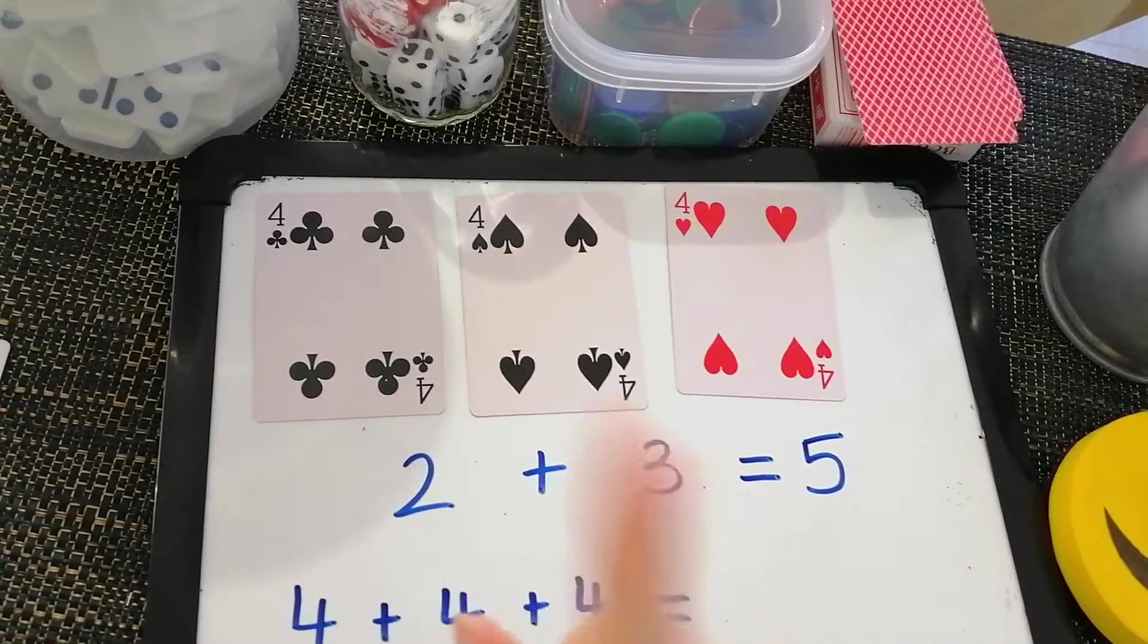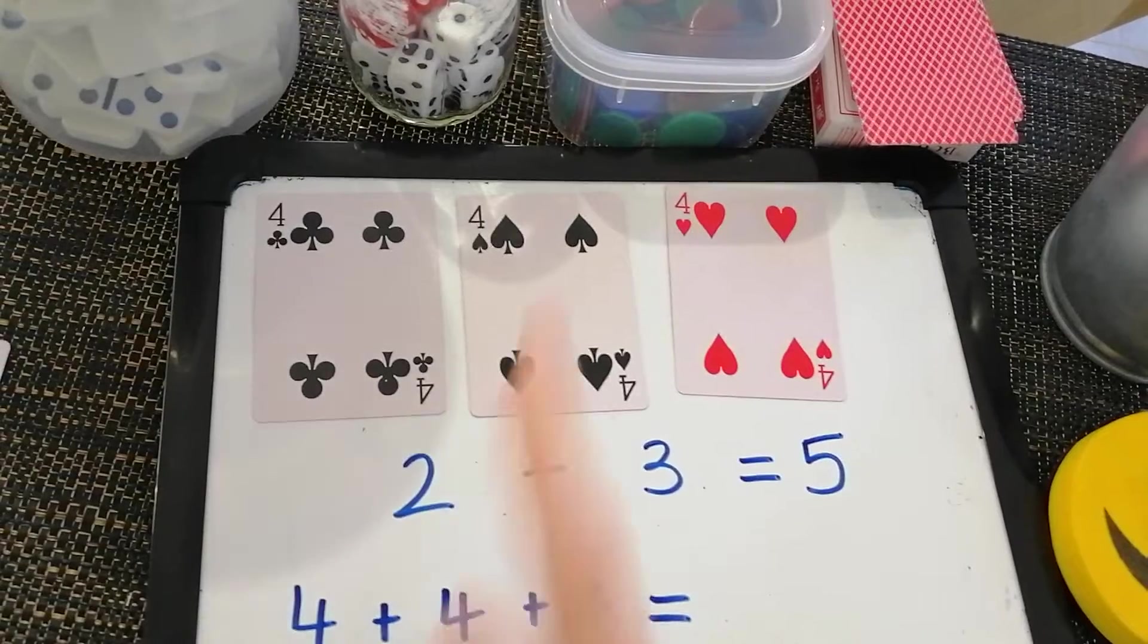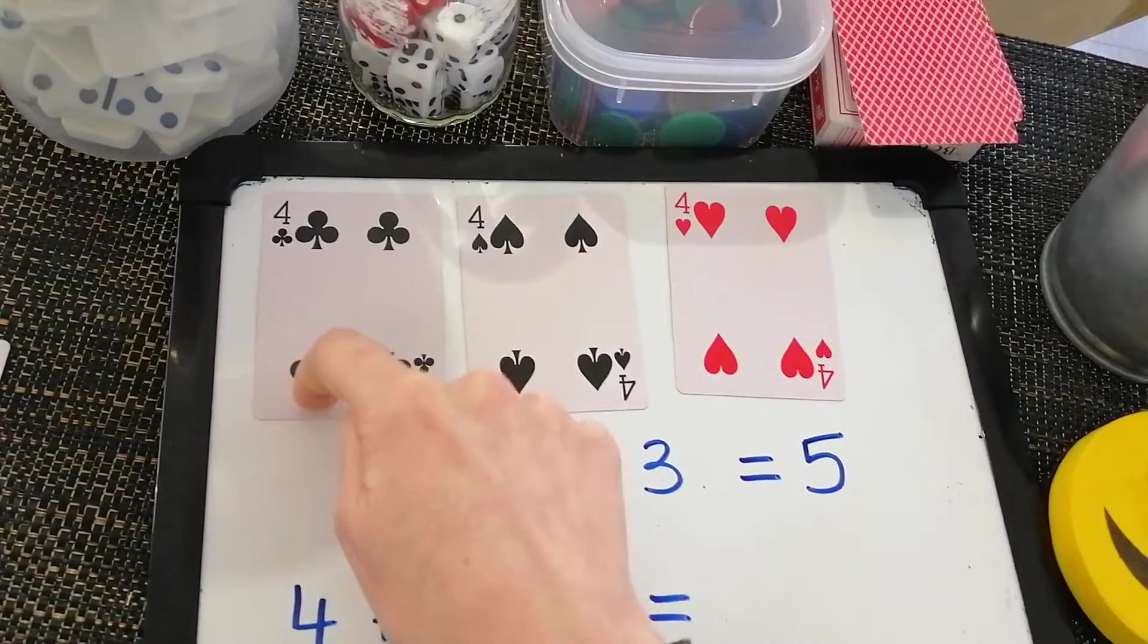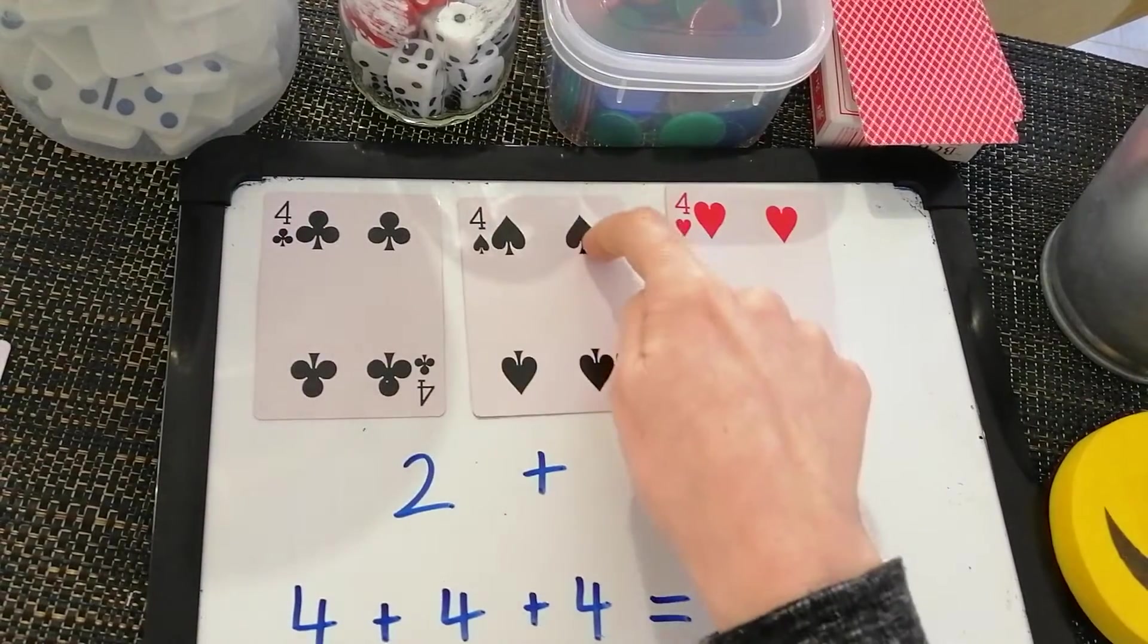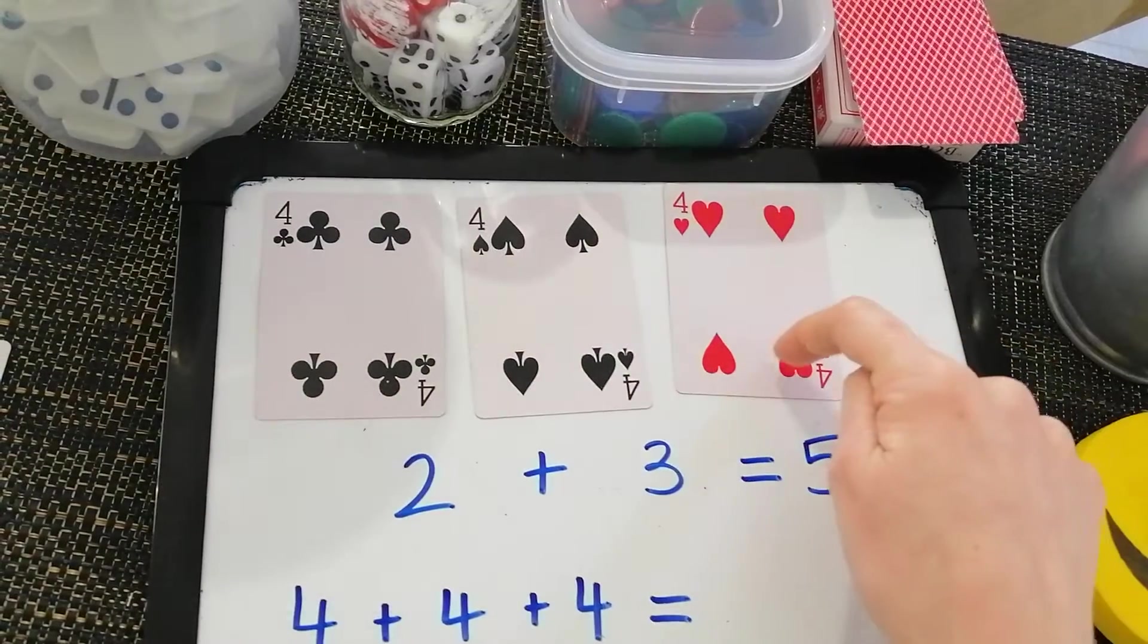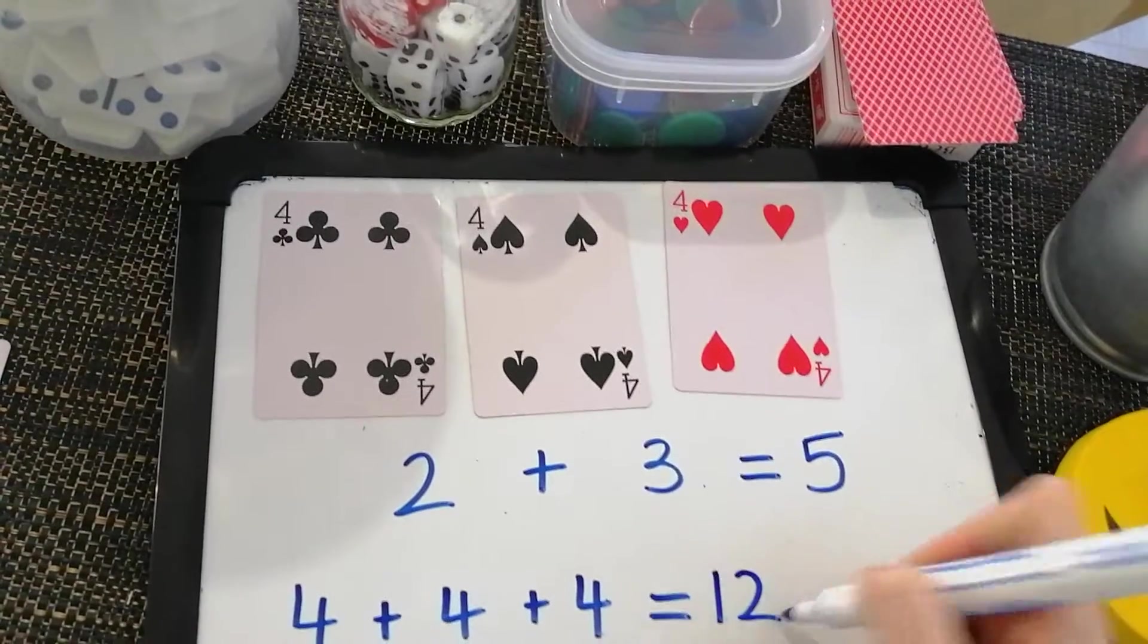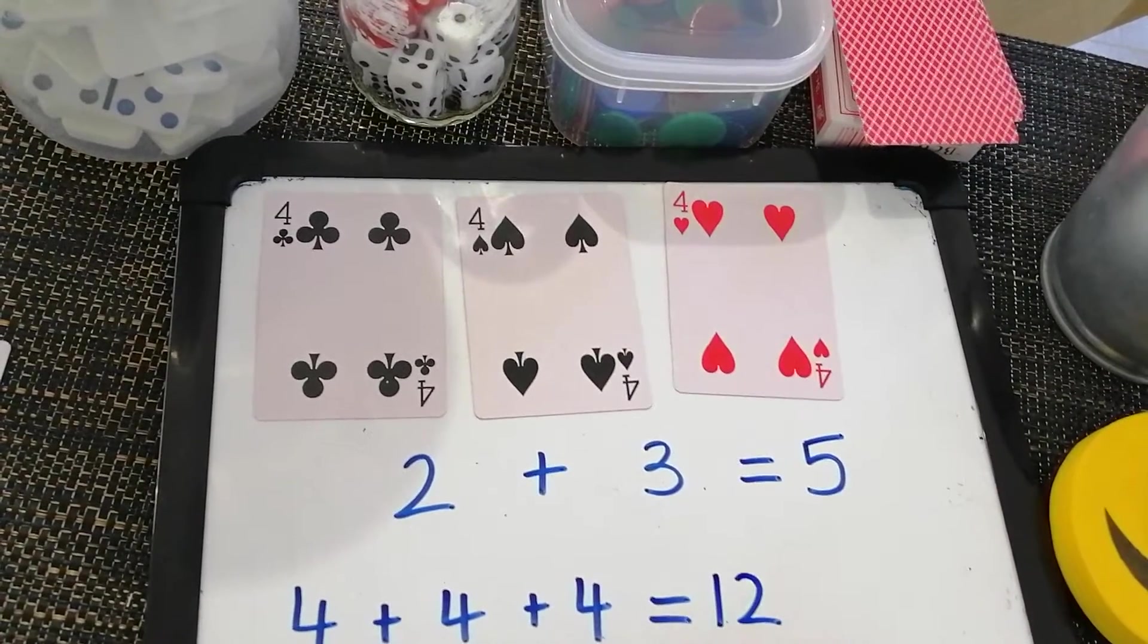So counting one by one touching the picture so I don't count it twice. One, two, three, four, five, six, seven, eight, nine, ten, eleven, twelve. Twelve all together. Four plus four plus four equals twelve.